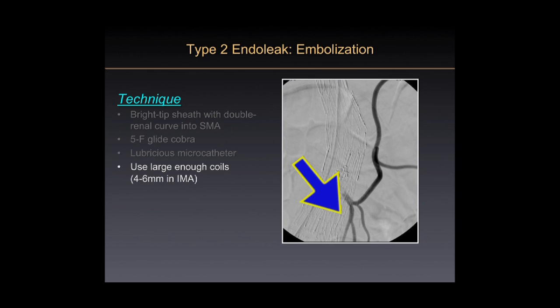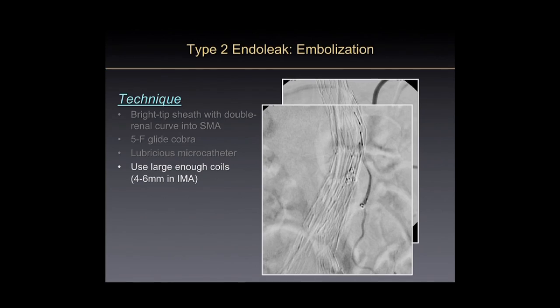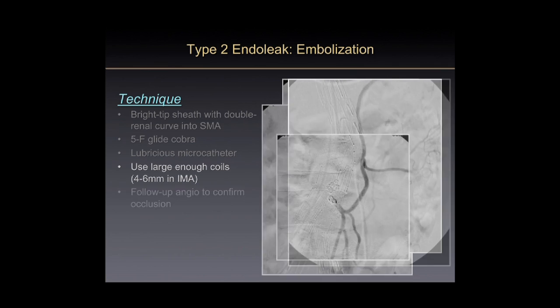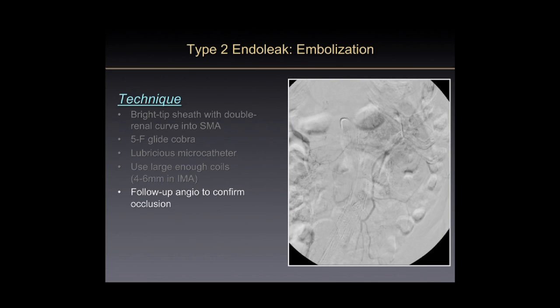Getting into the sac is your chance to put in small particulate debris or glue to allow flow within the aneurysmal sac to carry it to outflow vessels. Obviously, bad things can happen: skin necrosis, spinal cord damage, and colon infarction have been reported with glue and thrombin, so use enough but not too much. Don't reflux into the inferior mesenteric artery — that affects flow to the large bowel. Use large enough coils. In the end, do a follow-up angiogram to confirm you've occluded the endoleak — and doing that, you can be successful the vast majority of the time.